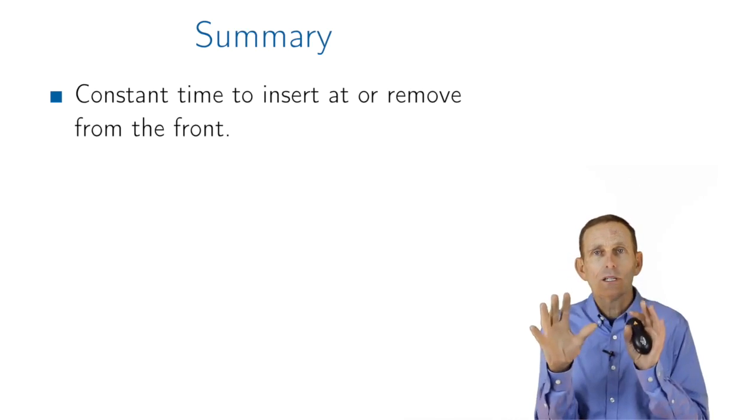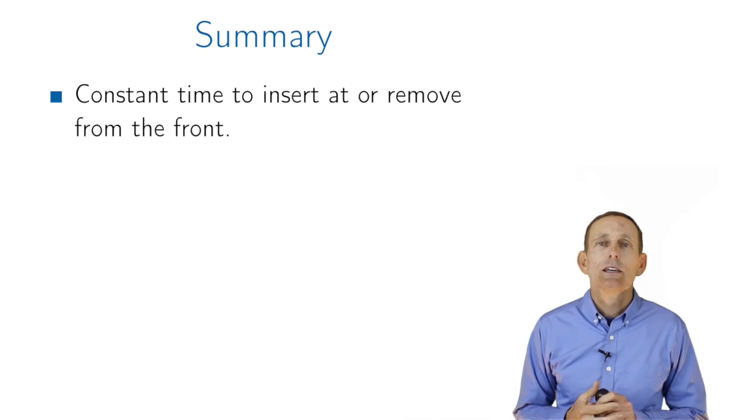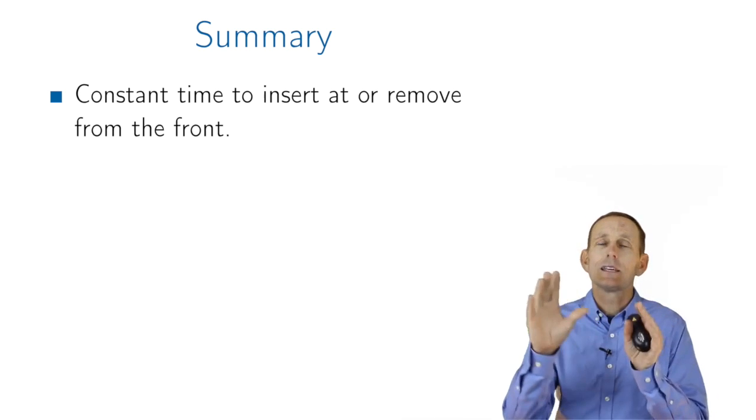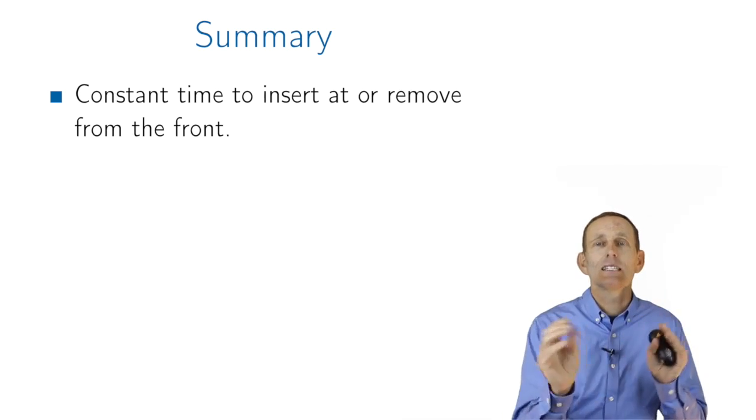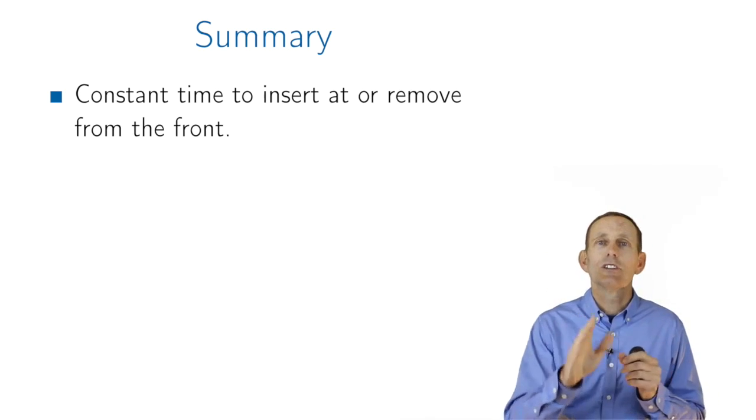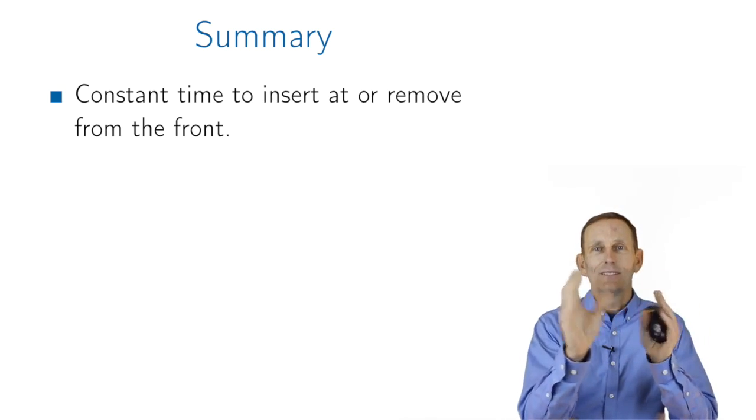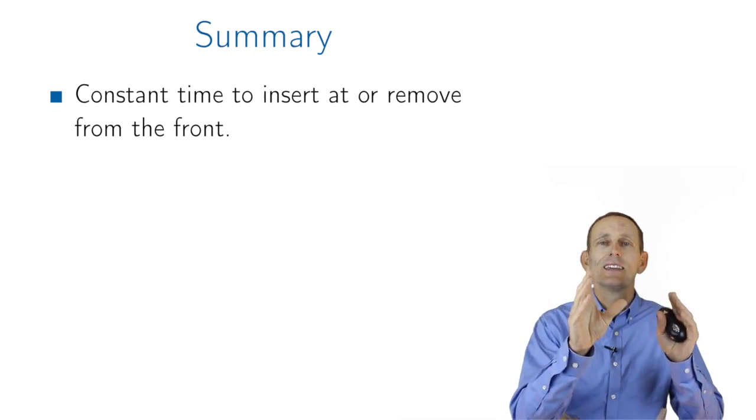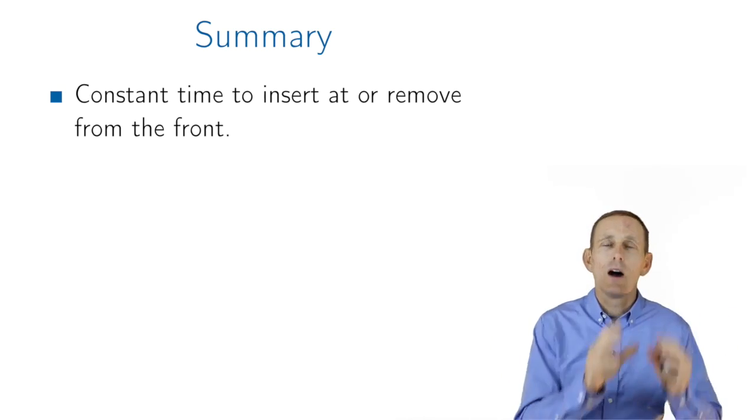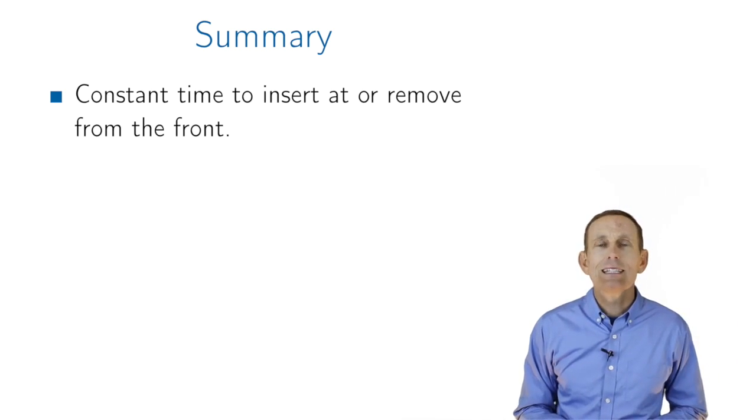One thing to point out is we contrast arrays versus linked lists. In arrays, we have random access, in the sense that it's constant time to access any element. That means things like a binary search are very simple, where we start searching in the middle, and if we have a sorted array, we can decide which side of the array we're on, and then go to one side or the other. For a linked list, that doesn't work.